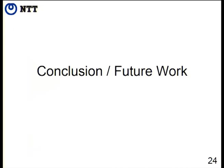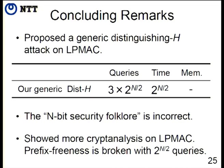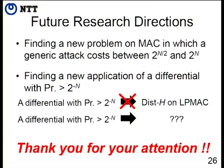In conclusion, in this paper we propose a generic distinguishing-H attack on LPMAC with complexity in the order of birthday complexity. The N-bit security folklore is incorrect. We also showed more cryptanalysis called Almost Universal Forgery on LPMAC. One future direction is finding new problems on MAC where a generic attack lies between 2^(N/2) and 2^N — like almost universal forgery, there may be new interesting problems in MAC security.